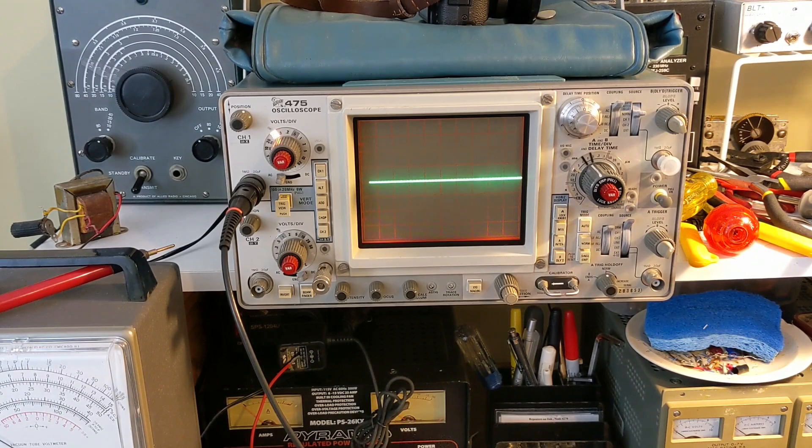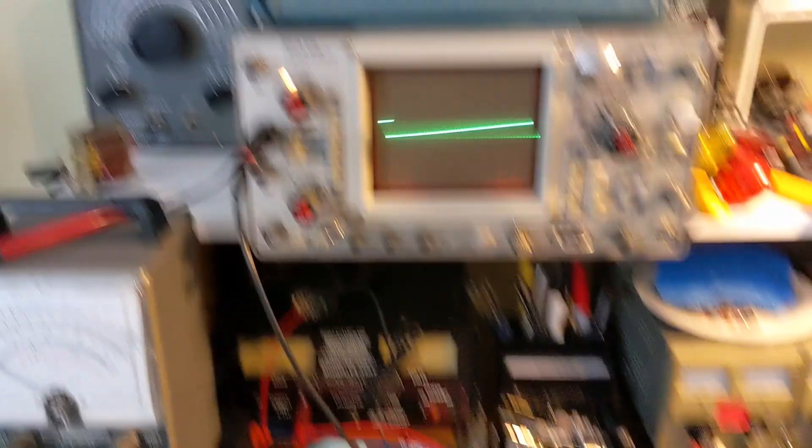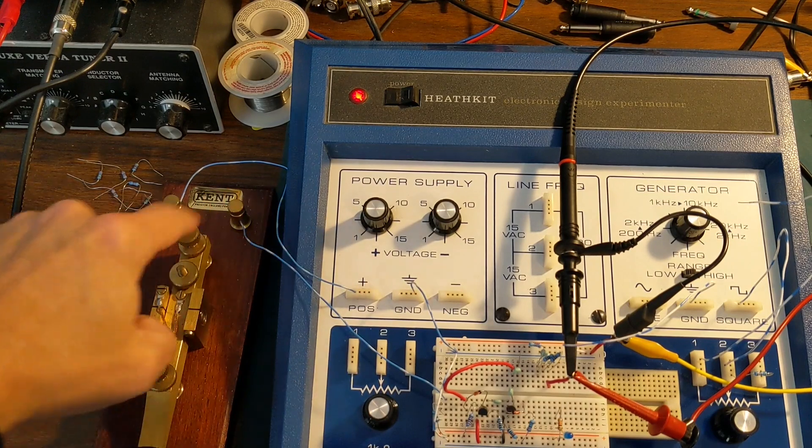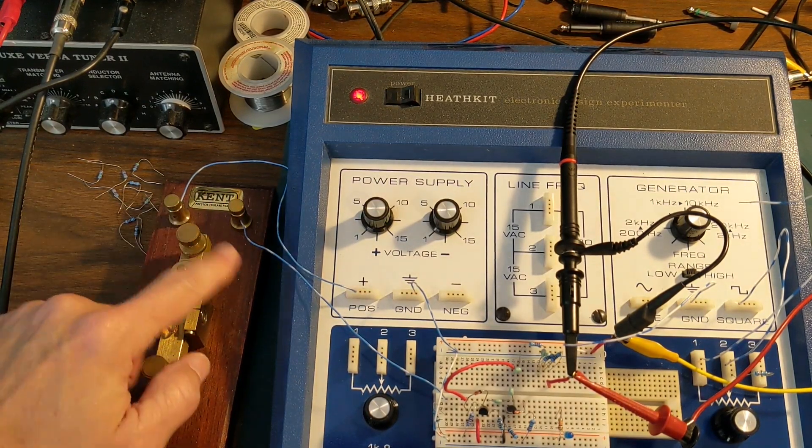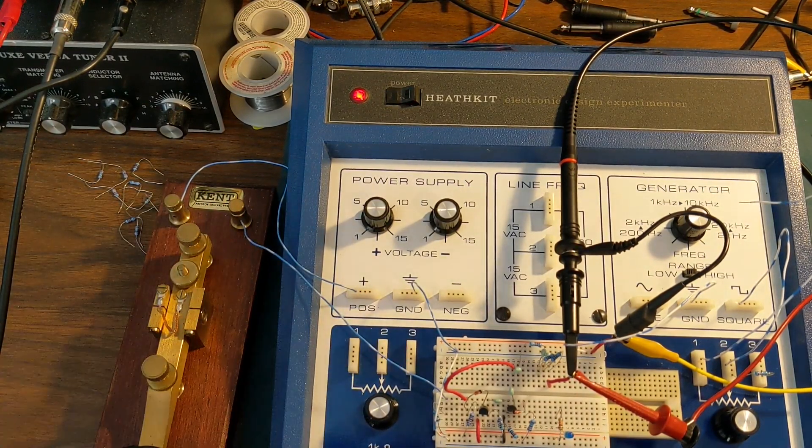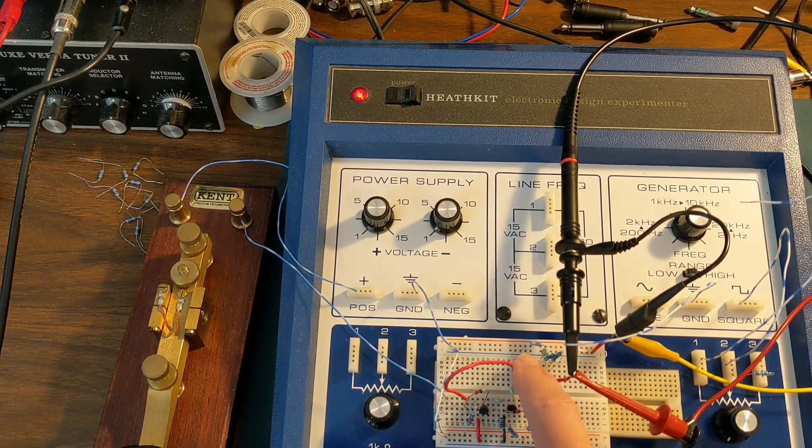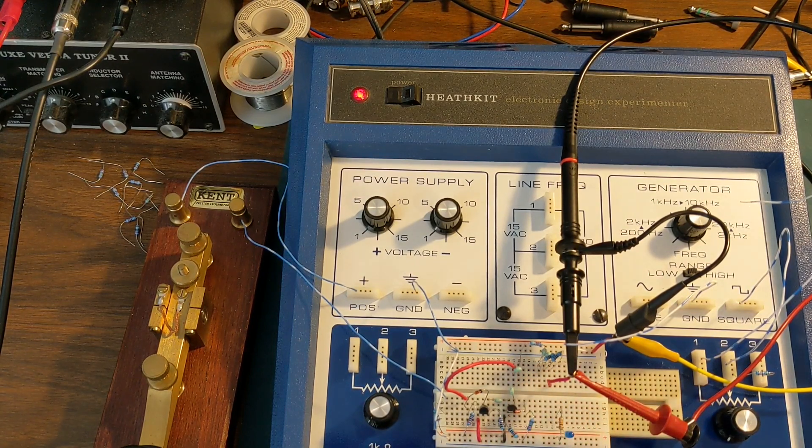So, the generator is disconnected from the circuit. And now, what we have is the voltage from the power supply goes to my key. And the key completes the circuit. And it's going to drive the multivibrator. Its output is going to go into the same RC circuit.